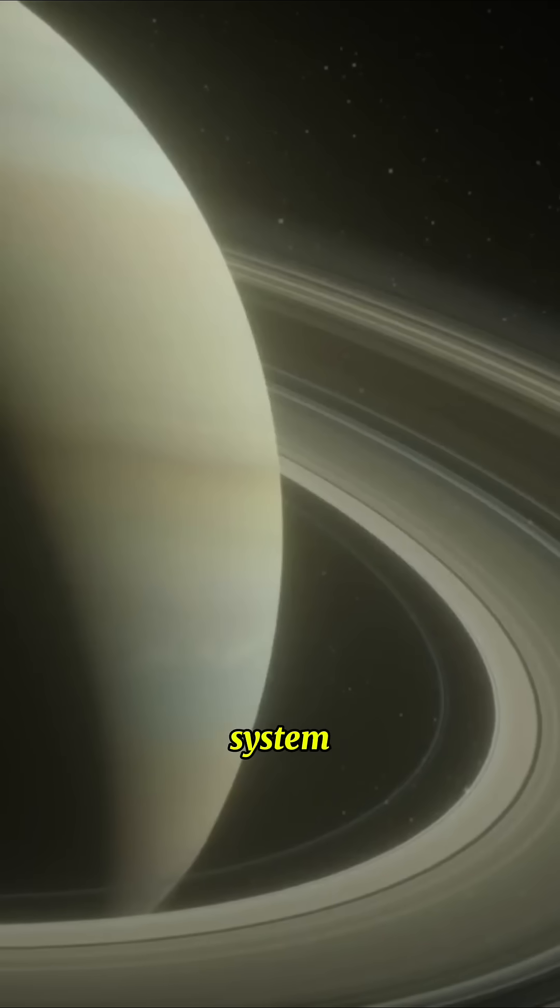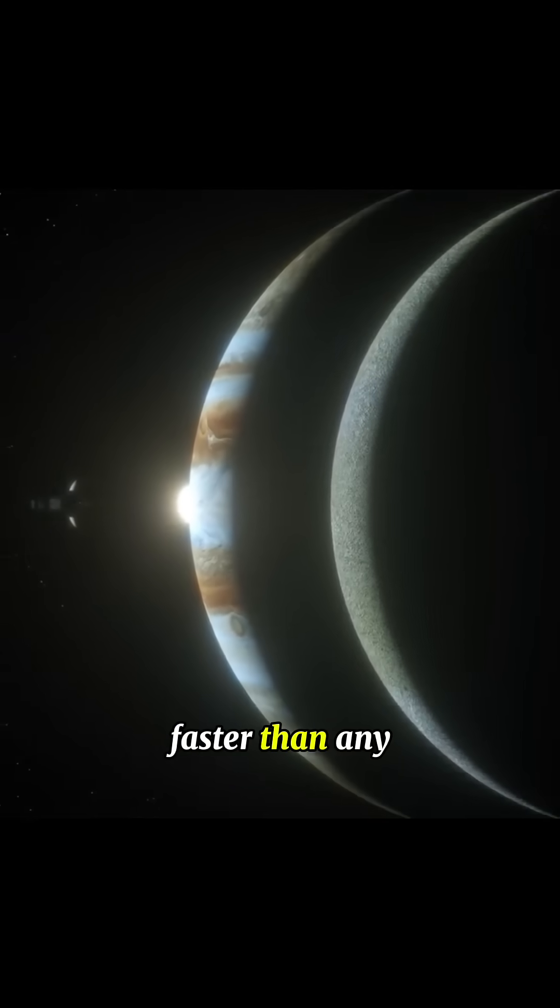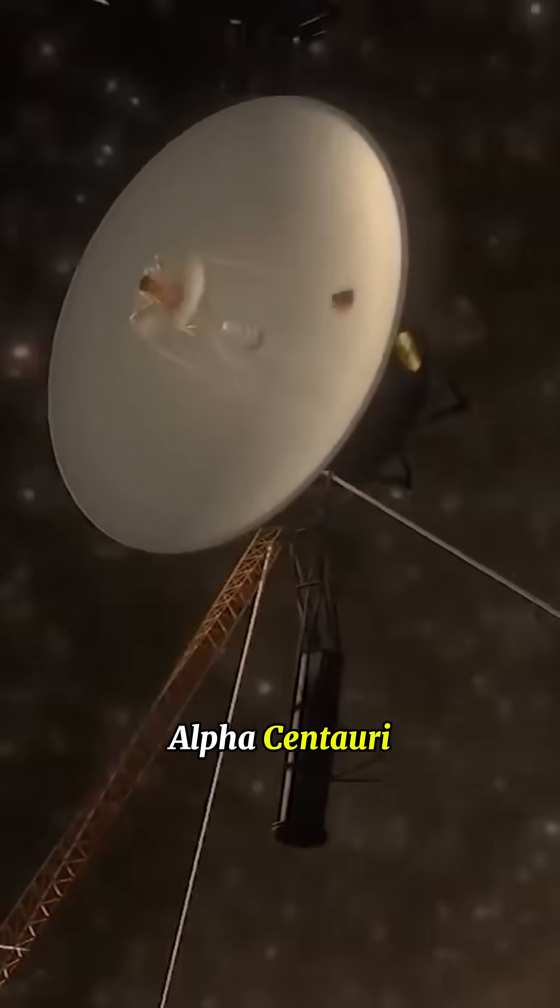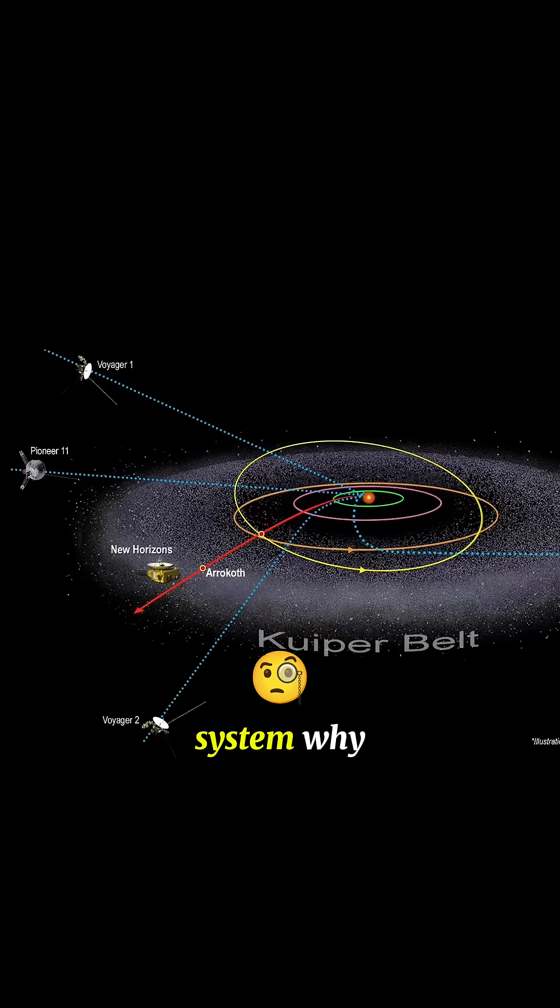It's heading out of the solar system at 17 kilometers per second, faster than any rocket we've ever built. And yet, it will never reach Alpha Centauri, our closest star system. Why?